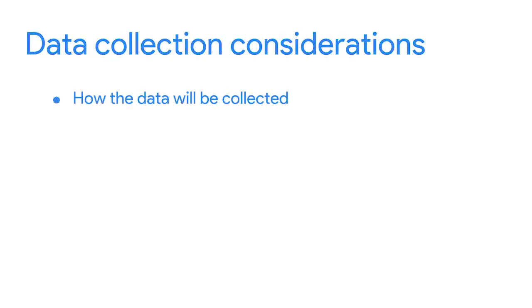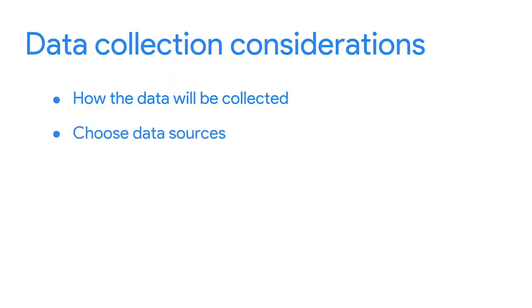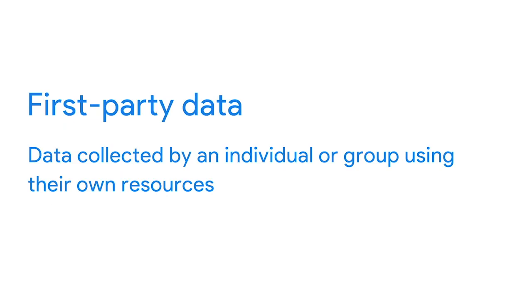In this video, you'll learn which factors to consider when collecting data. Usually, you'll have a head start in figuring out the right data for the job because the data you need will be given to you, or your business task or problem will narrow down your choices. So let's start with a question like: what's causing increased rush hour traffic in your city? First, you need to know how the data will be collected. You might use observations of traffic patterns to count the number of cars on city streets during particular times. In our traffic example, your observations would be first-party data — this is data collected by an individual or group using their own resources.